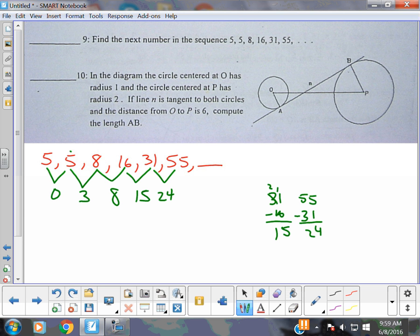Alright, 0, 3, 8, 15, 24. Maybe I don't see the pattern still. So I'll do the math again. 3, 5, 7, 24 minus 15 is 9. I think you better see it now.